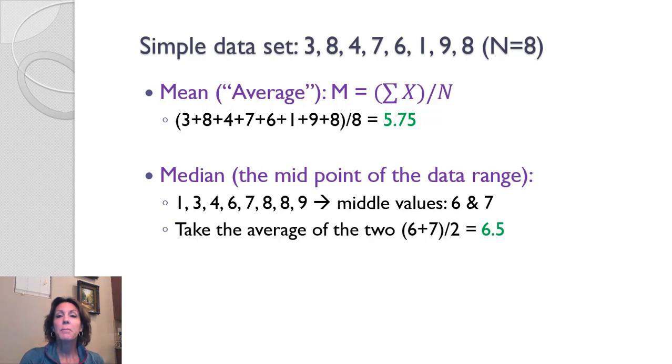Median, as I talked about, being the midpoint of the data range, we have to line all the numbers up in order from smallest to largest. And then we either find the very middle number, or in the case of an even number, we have to average the two middle values. So there are eight numbers here. That's an even number. So we have to look at the two middle values, 6 and 7, add them together and find the average. So our median in this case would be 6.5.